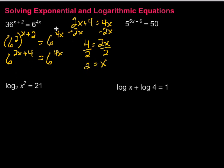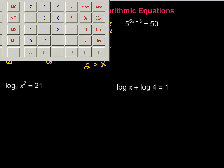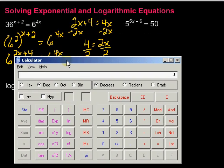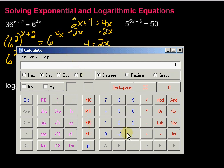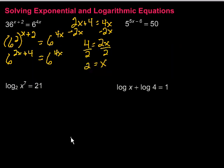We can always check our answer. If we take that 2 and put it back in, x plus 2 would be 2 plus 2, so 36 to the 4th power. And that's equal to 6 to the — well, 4 times 2 is 8 — 6 to the 8th power. Let's grab our calculator: 36 to the 4th power equals about 1.6 million, and 6 to the 8th power equals the same thing. It does indeed work.